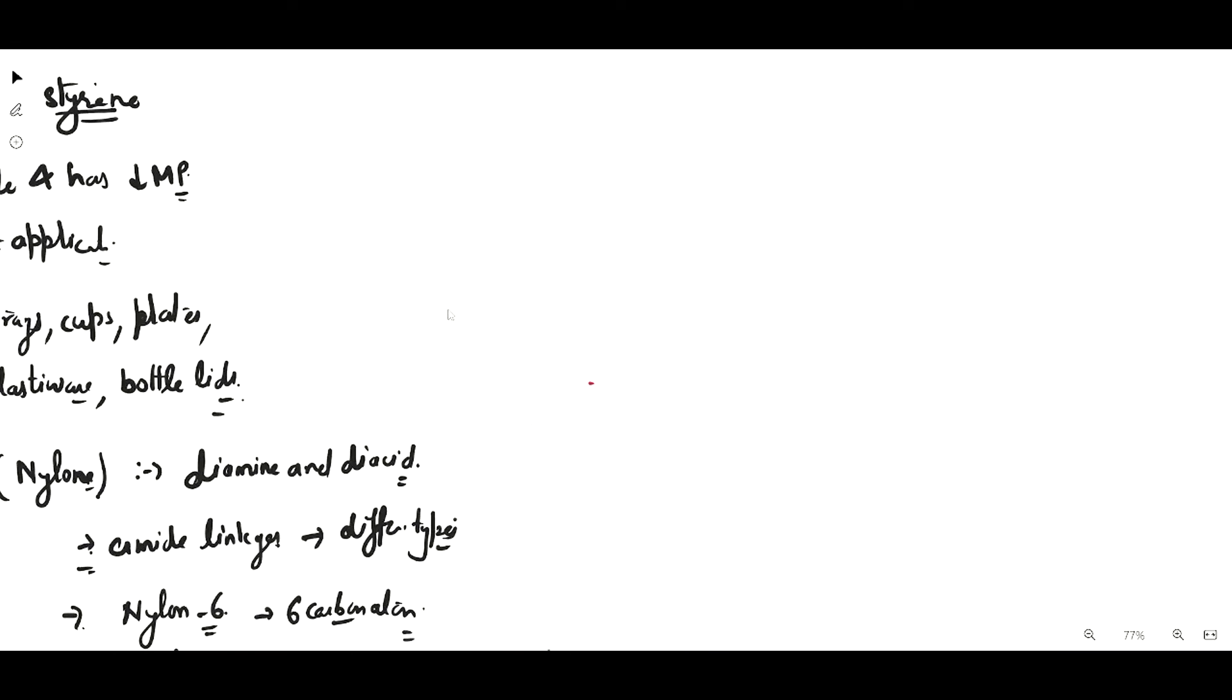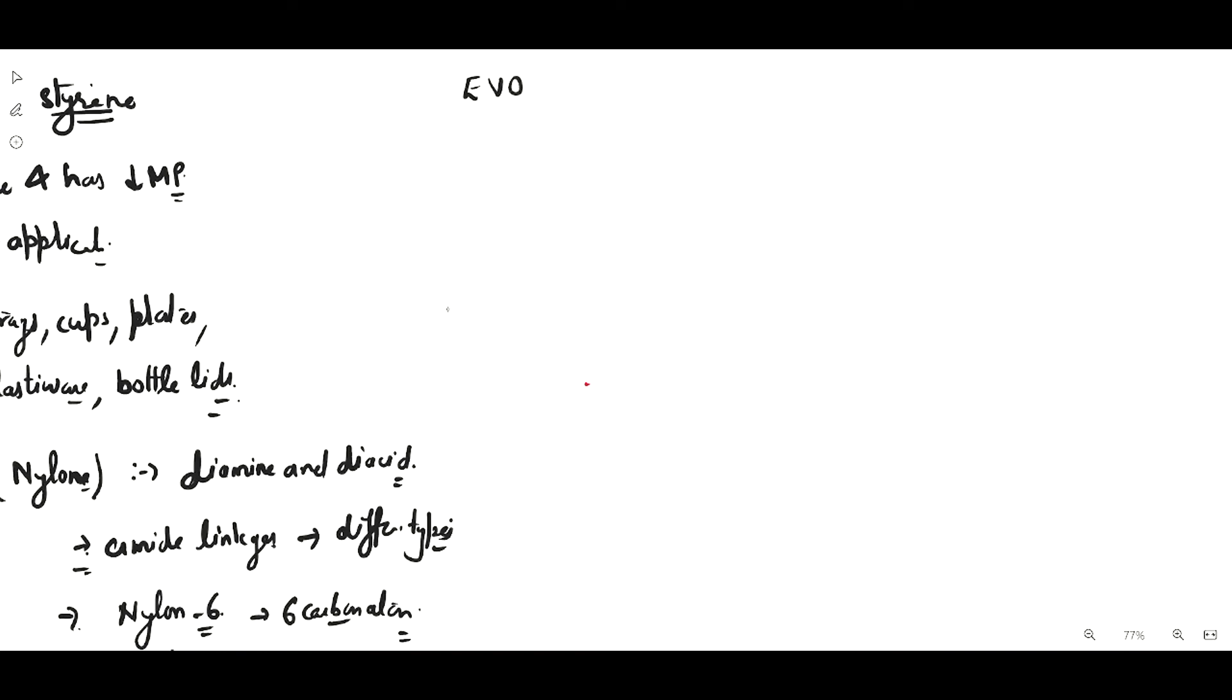Another type of plastic is EVOH, or ethylene vinyl alcohol. The monomer units used are ethylene and vinyl alcohol. They are an excellent barrier for gases such as oxygen, and also for fats and oils. They do not allow oxygen, fats, or oils to enter the food material.